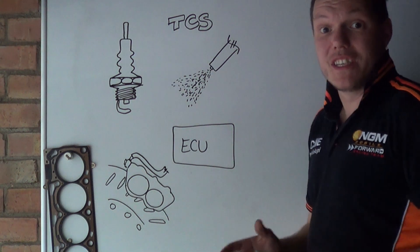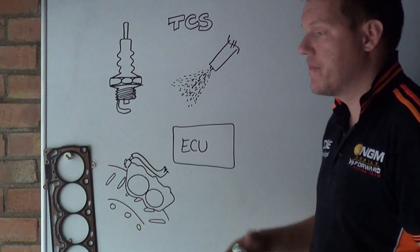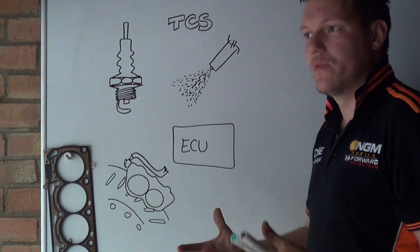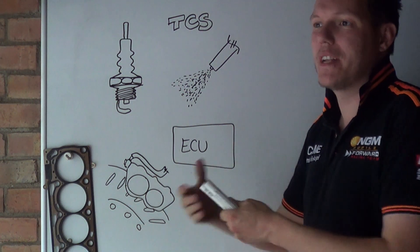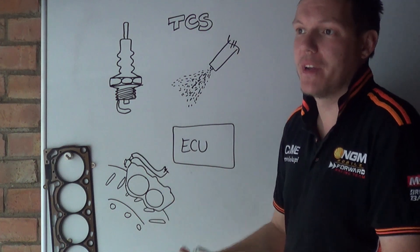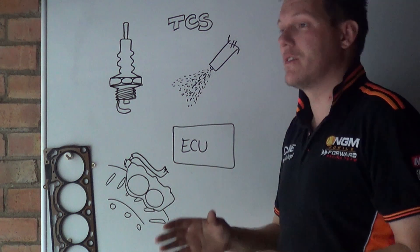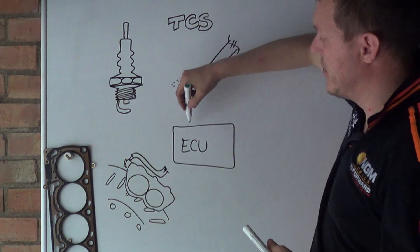So now that the ECU has detected that slip is occurring, what can the ECU do? Different systems work on different principles. It depends what the manufacturer feels comfortable doing, it's just up to them. The other thing is it also depends what systems are in play. So the one thing that the ECU can do...